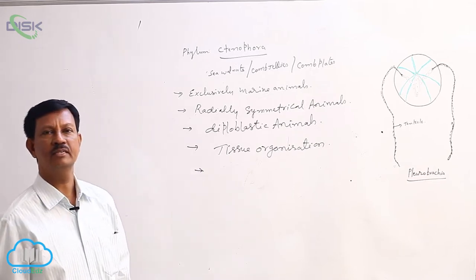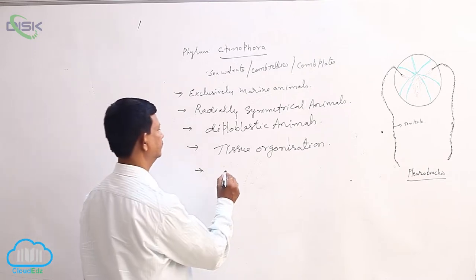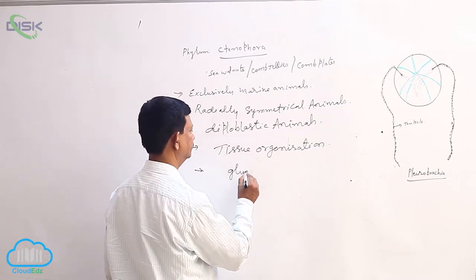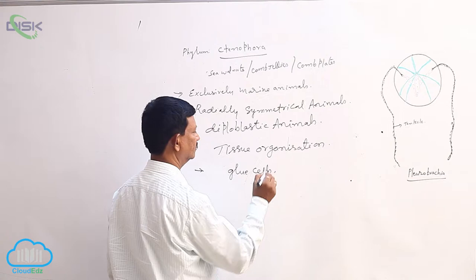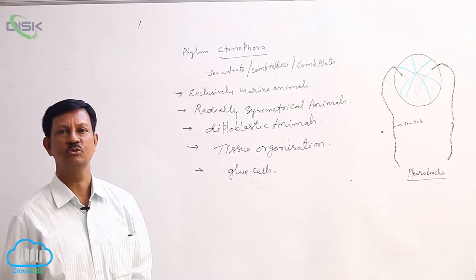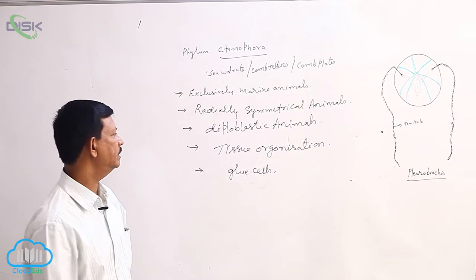Special cells known as glue cells are present, or lasso cells. These are also known as lasso cells which help in food capture.